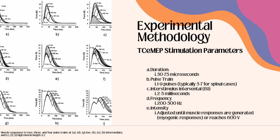The effectiveness of MEP stimulation depends on properly setting parameters and accurately targeting the motor cortex. The TC-MEP stimulation parameters are as follows: duration is between 50 to 75 microseconds; pulse train is 1 to 9 pulses, but for spinal cases it's 5 to 7; the interstimulus interval, or ISI, is 2 to 5 milliseconds; the frequency is 200 to 500 hertz; and the intensity is adjusted until muscle responses, also known as myogenic responses, are generated, or it reaches 600 volts. The stimulation intensity is adjusted based on individual motor thresholds. Following stimulation of the cerebral cortex, it takes approximately 3 milliseconds to the peak of an excitatory postsynaptic potential, or EPSP, in a spinal motor neuron. Additionally, stimulation rates of less than 200 hertz are needed for temporal summation at motor neuron membranes.